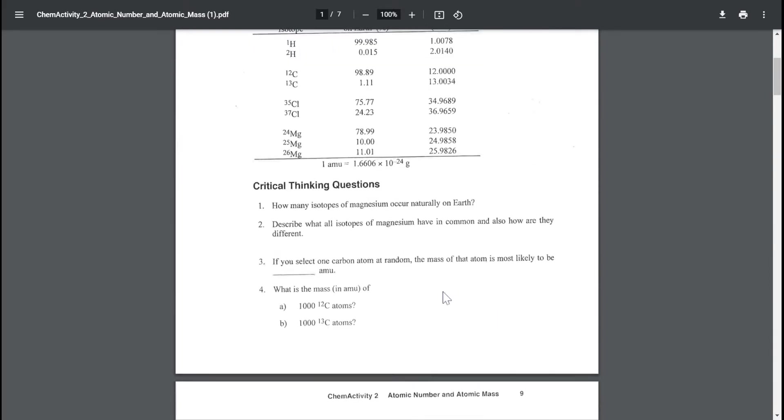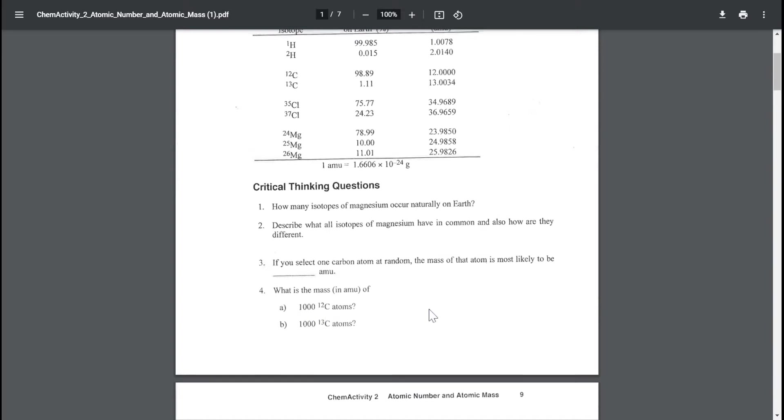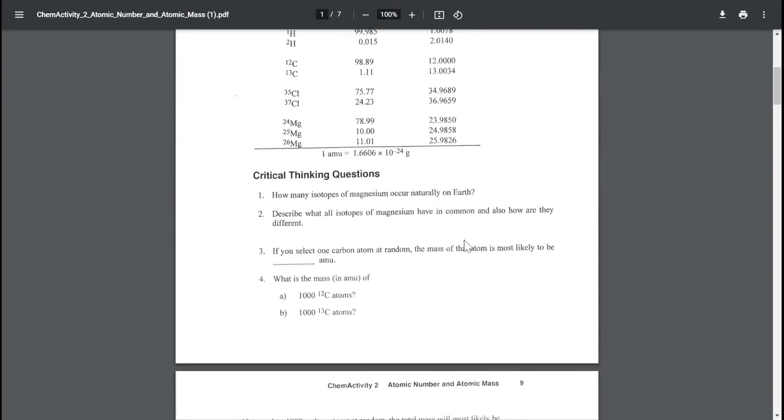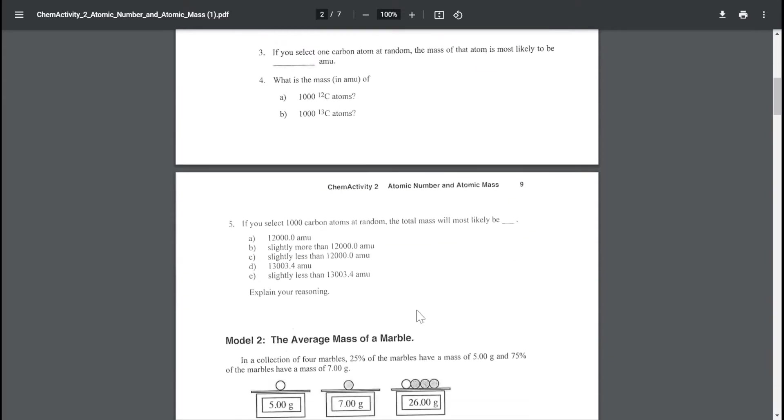Then there's questions like, what is the mass in AMU when I have 1000 carbon-12 atoms? You can go here and look at carbon-12. You see, almost all of the carbon is carbon-12, and it is exactly 12 AMU. If I have 1000 of them, I just have to multiply 12 by 1000.